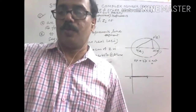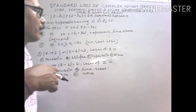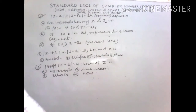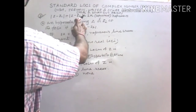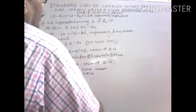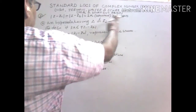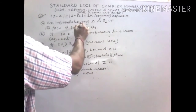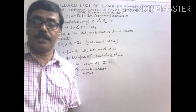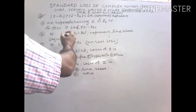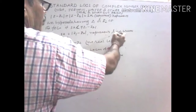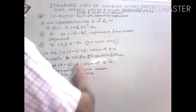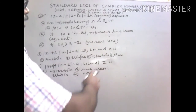Result number 2: |Z - Z1| - |Z - Z2| = 2k, where k is a constant, represents a hyperbola having Z1 and Z2 at the foci if 2k < |Z1 - Z2|. If 2k equals |Z1 - Z2|, it represents a line breadth. If 2k is greater than |Z1 - Z2|, there is no real locus.